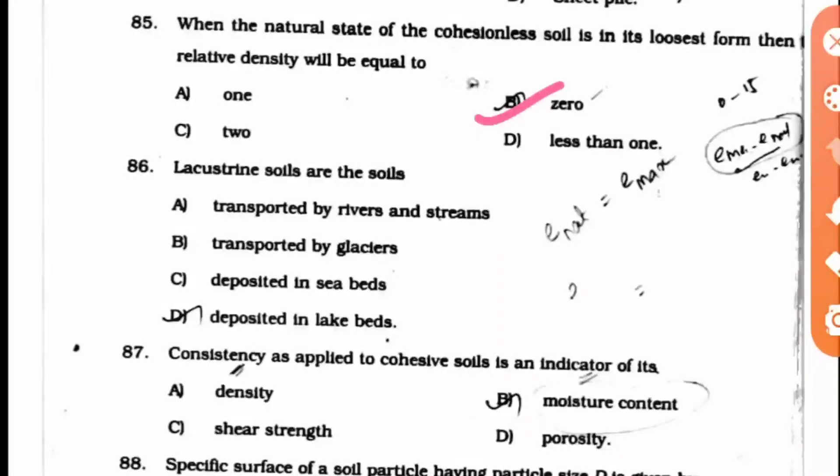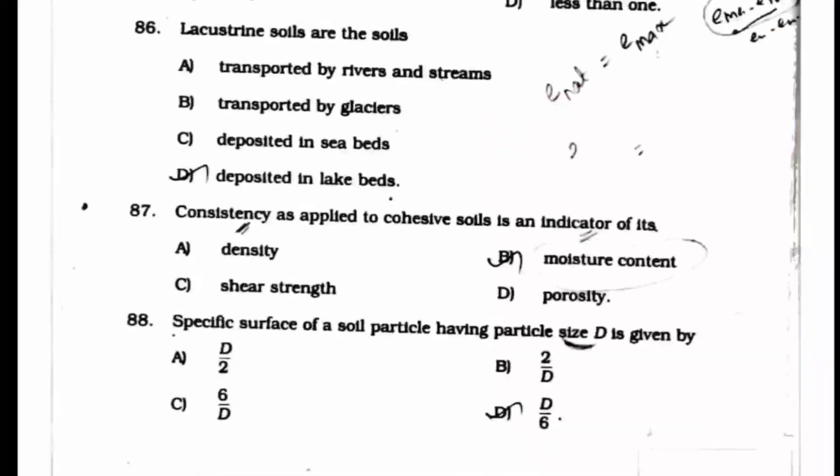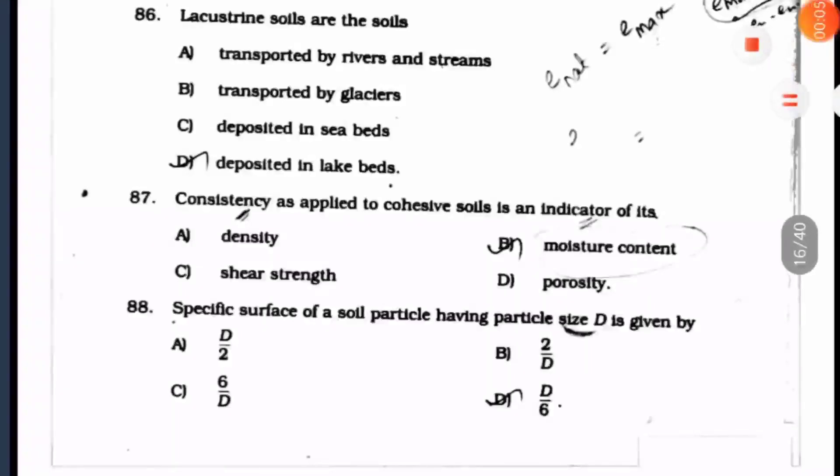Question 86: Lacustrine soils are the soils deposited in lake beds. So option D is the right answer. All these topics we have already seen in the starting lectures of soil mechanics. Transported by rivers and streams means alluvial soil, transported by glaciers means glacier or drift or till or outwash, and deposited in sea beds means marine or marl.